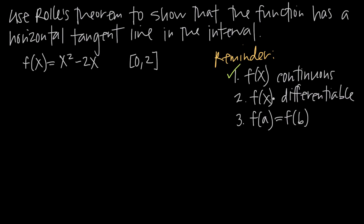Then f(x) has to be differentiable. If there's any point of discontinuity, the function is not going to be differentiable at that point. There are no points of discontinuity, so we just need to make sure we can differentiate this function. If we take the derivative, f'(x) = 2x - 2, since the derivative of x² is 2x and the derivative of -2x is -2. So the function is differentiable everywhere in the interval.